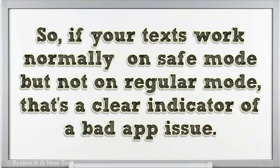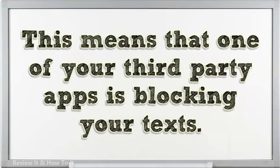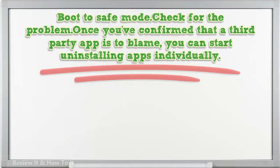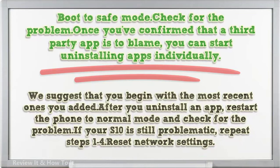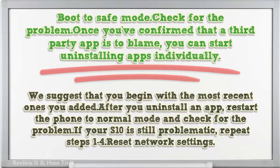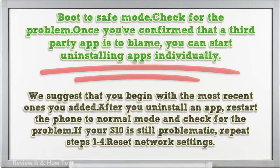If your texts work normally in safe mode but not in regular mode, that's a clear indicator of a bad app issue — one of your third-party apps is blocking your texts. Boot to safe mode, check for the problem. Once you've confirmed that a third-party app is to blame, start uninstalling apps individually, beginning with the most recently added ones. After you uninstall an app, restart the phone to normal mode and check for the problem. If your S10 is still problematic, repeat the steps. Reset network settings.